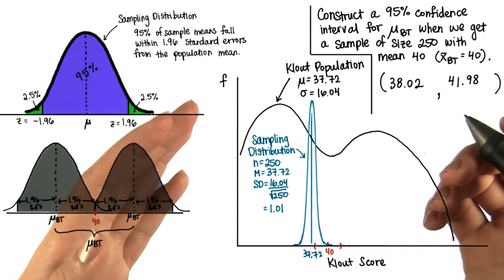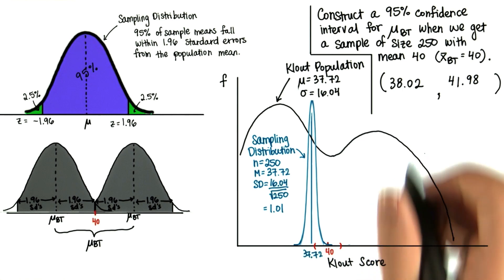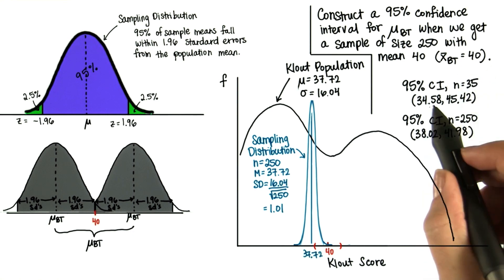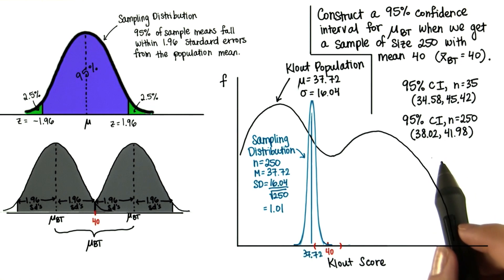So with a bigger sample size, we have a smaller interval for which we're pretty sure the true population lies. So with a 95% confidence interval with sample sizes being 35, we had a pretty big interval. But with a 95% confidence interval with sample sizes being 250, we had a much smaller confidence interval.